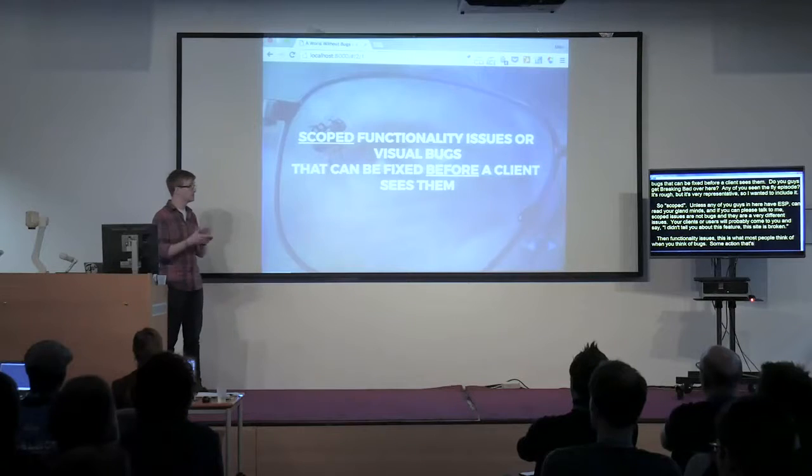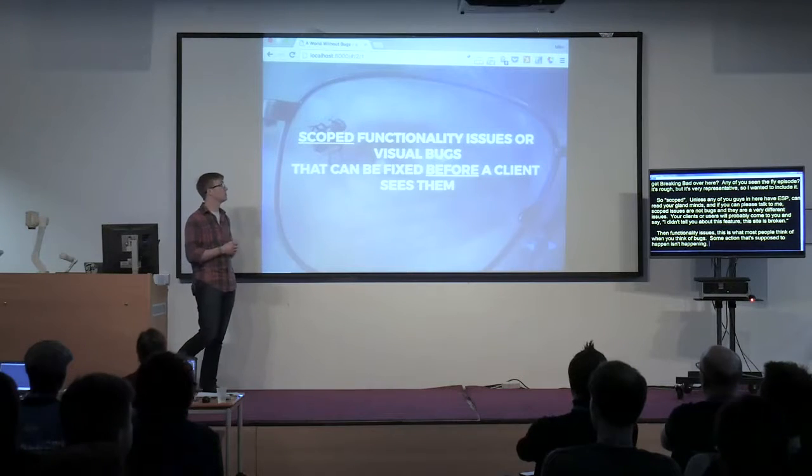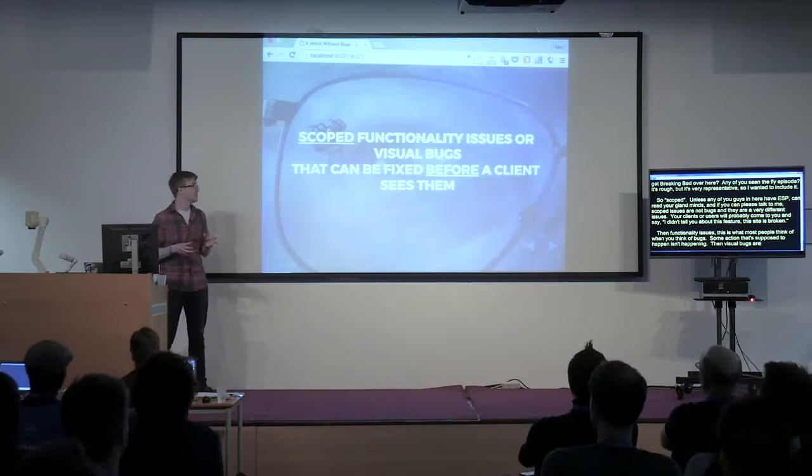Functionality issues — I think this is what most people think of when we think of bugs. You have a 500 error, or a contact form is not submitting, or some action that's supposed to happen is not happening. And then visual bugs are a little more ambiguous. This can be a grid that's not laying out, or a responsive issue, or one of a thousand things that's visually not happening even though the site effectively works. They're still bugs because your client is going to think they're bugs.